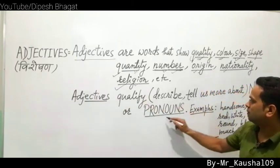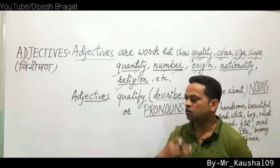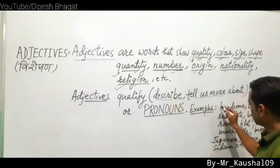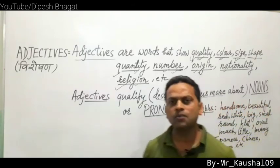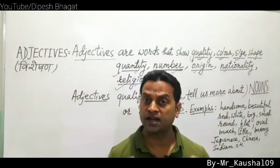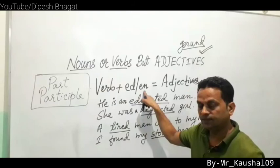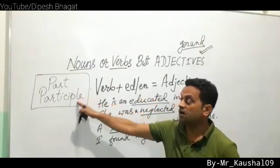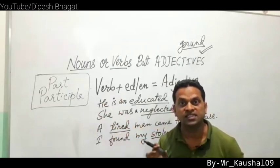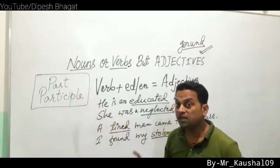So adjectives qualify nouns or pronouns — they describe or tell us more about them. Now let's see how past participle (verb plus -ed or -en, the third form of verb) becomes an adjective. Past participle used as adjective: 'He is an educated man' — educate is a verb, educated (past participle) is the adjective.